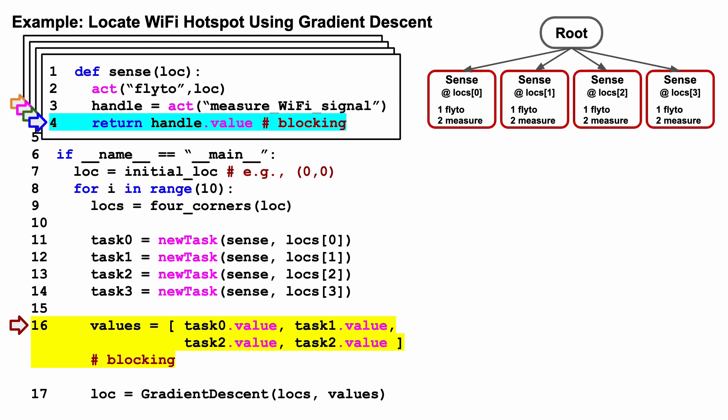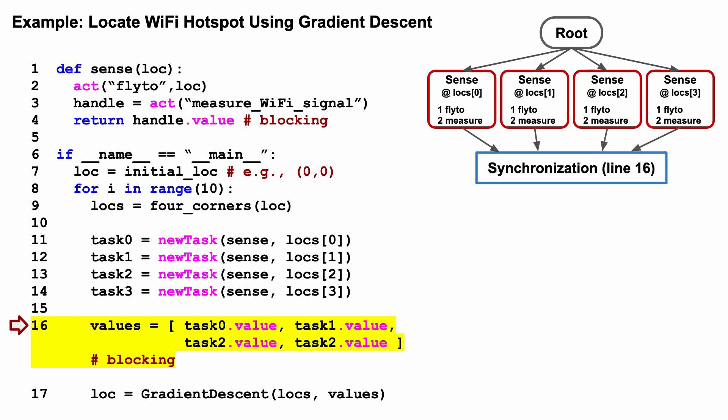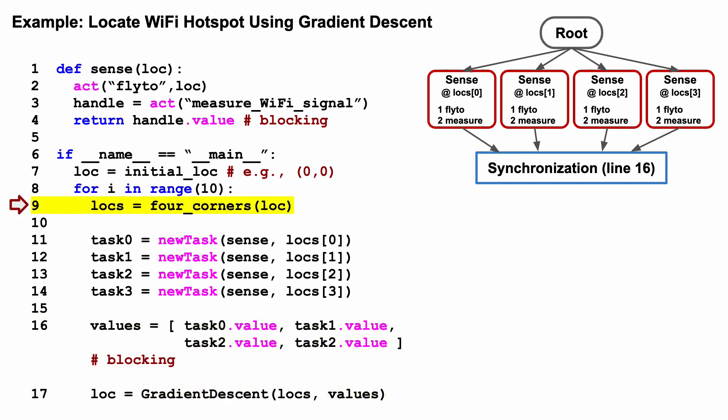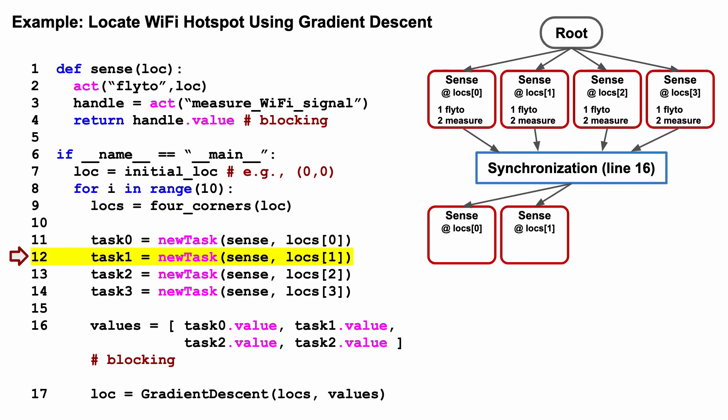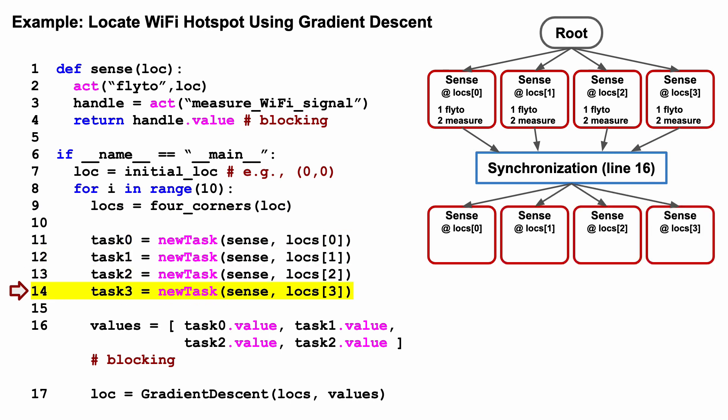At this moment, the orchestration system will schedule drones to do the four tasks. The four tasks can be done with one drone in sequence or with multiple drones in parallel. After the four tasks are completed, the sense function returns and the execution of the main loop continues. The loop moves the center location towards the Wi-Fi hotspot, then execution enters the next iteration and keeps appending new tasks to the task graph.